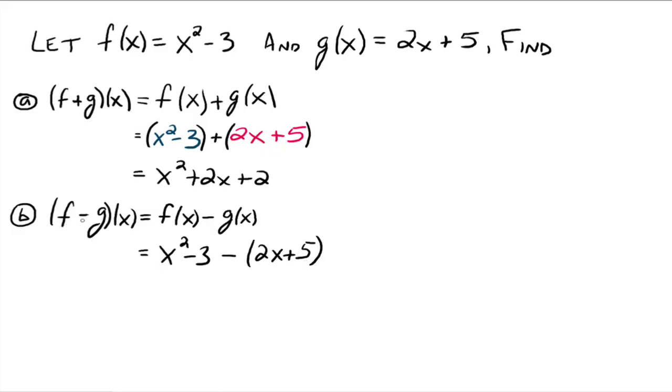So you do need to make sure you put those parentheses around the second function that you're subtracting. So if this would have been g minus f, we would have had g of x minus f of x. And we would have had 2x plus 5 minus, and then parentheses, x squared minus 3. Alright, so just be very, very careful of your parentheses there. So then this goes to x squared minus 3 minus 2x minus 5. And so that goes to x squared minus 2x minus 8.